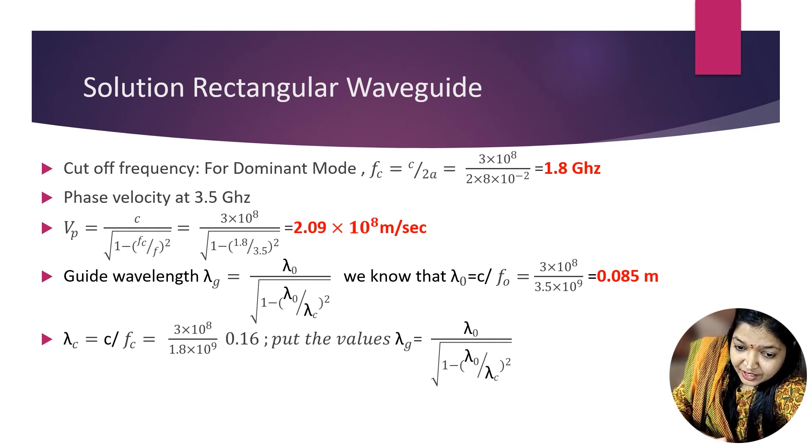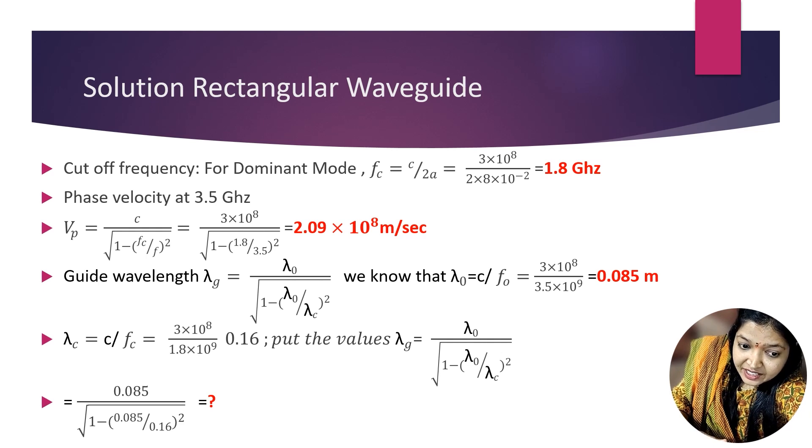And λc = c/fc. Similarly, it is 0.16. So put the values in the formula: λg = 0.085/√(1-(0.085/0.16)²).